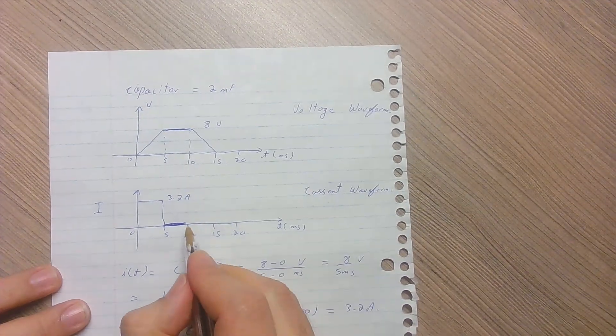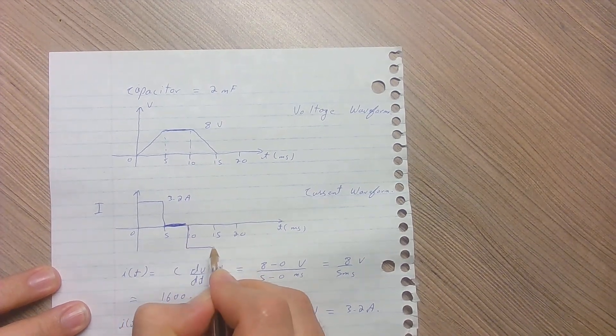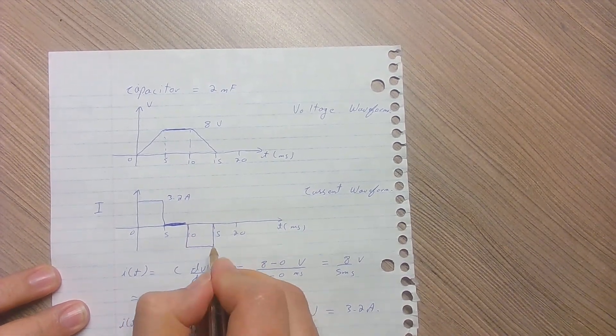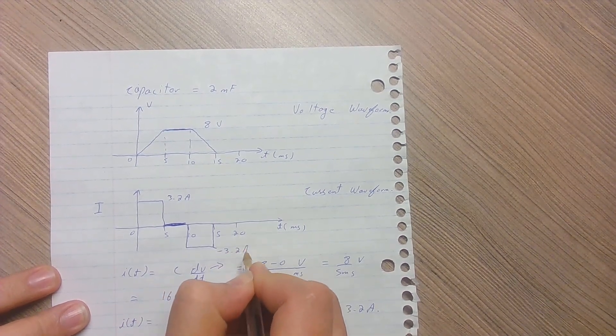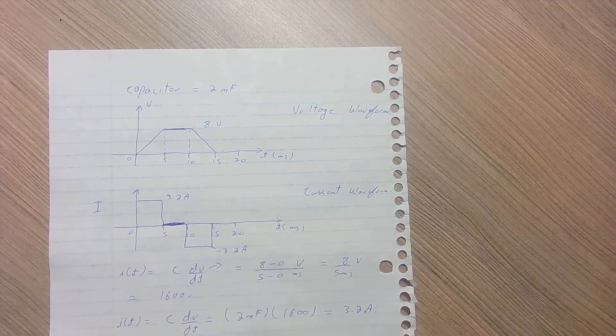So from 10 milliseconds to 15 milliseconds, the current will have a magnitude of minus 3.2 amperes. Thank you.